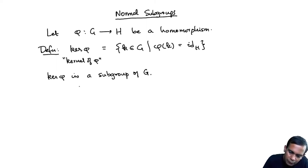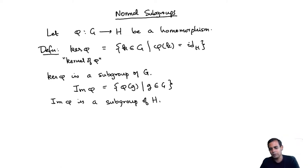Also we define image of phi, which I will call Im phi, to be the set of all phi of G as G runs over G. In set theory it's sometimes called the range of the function phi. This is a subgroup of H. Just because phi is a homomorphism, these things have to be subgroups.